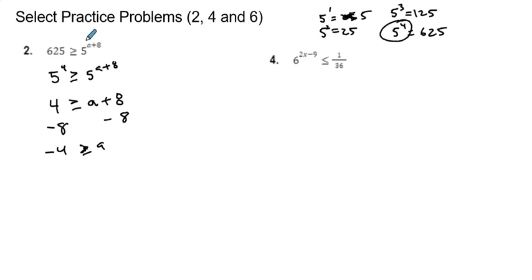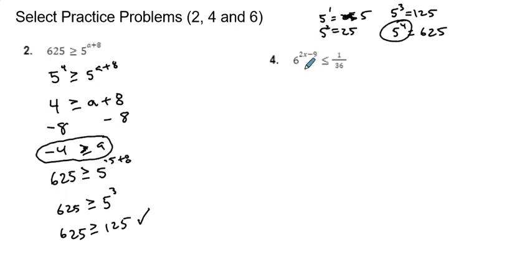If I take this and put it in here just to check and make sure it zeros everything out, it does work. You get negative 4 plus 8 is 4, and 5 to the fourth does work out with that. So now let's pick a number that's less than negative 4 and make sure this works. Let's do negative 5. So 625 has to be greater than or equal to 5 to the negative 5 plus 8. Negative 5 plus 8 is 3, so this is 5 to the third, and 5 to the third is 125. So 625 is in fact greater than 125. This is a true statement. That means my answer right here gets circled and we're in a good place.